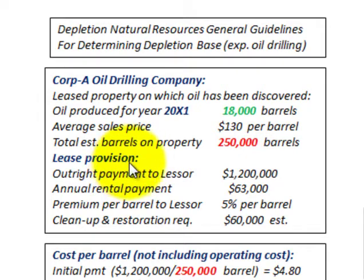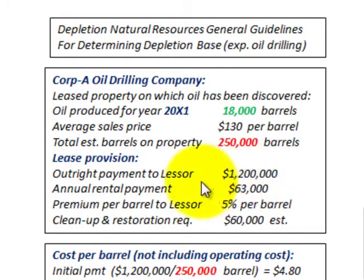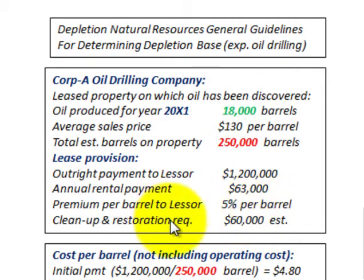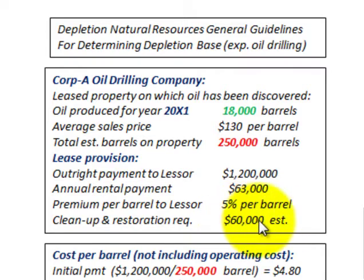The lease provision has an outright payment to the lessor of $1,200,000, an annual rental payment of $63,000 to the lessor, and a premium per barrel to the lessor of 5% of the barrel selling price of $130 per barrel. There is also a clean-up and restoration required after we're done with this site, so the oil company has to clean up their site.